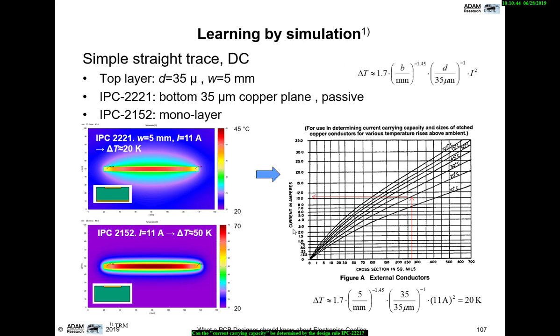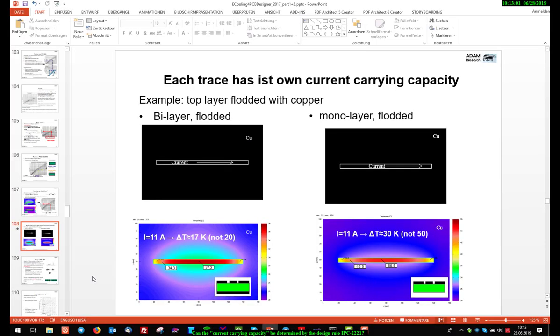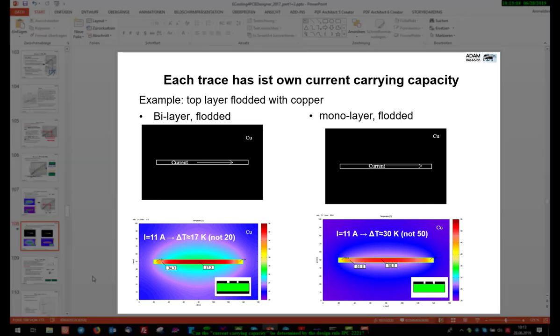We can simulate both situations, as you saw in the previous videos. This is the simulation for the two layer. 5 mm width, 11 amps input gives a temperature increase of 20 degrees Celsius, in perfect agreement with the graph. And if we remove the bottom plane, the temperature rises to 50 degrees. Same current and same width. That's, of course, a tremendous increase.